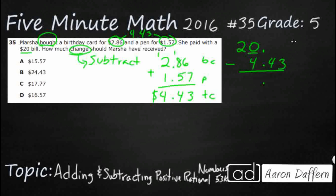Now I'm going to subtract, but there's a problem — I don't have any digits in my top row for $20 in the tenths or hundredths place. So what can we put in these empty spots without changing the value? We can always add zeros. You can add as many zeros after the decimal as you want without changing the value. So $20 becomes 20.00.